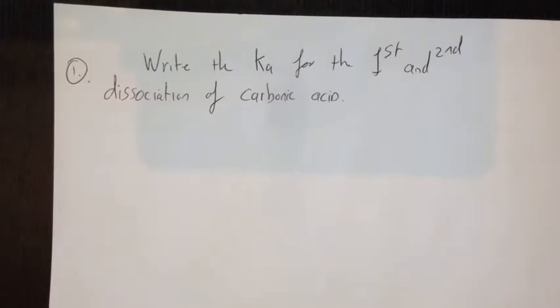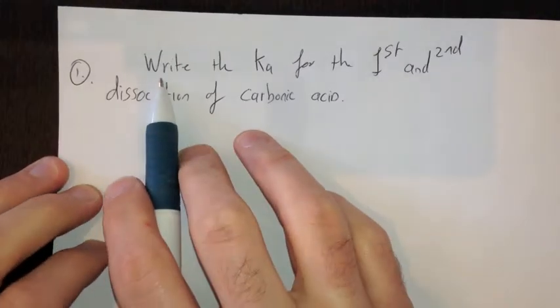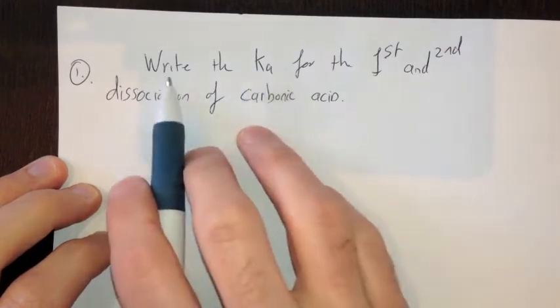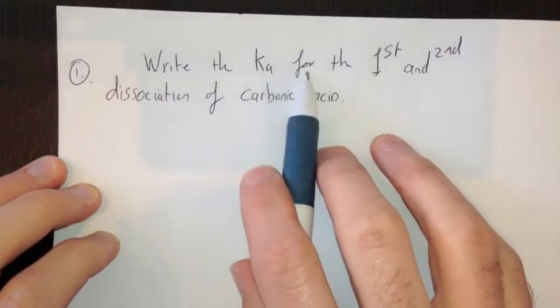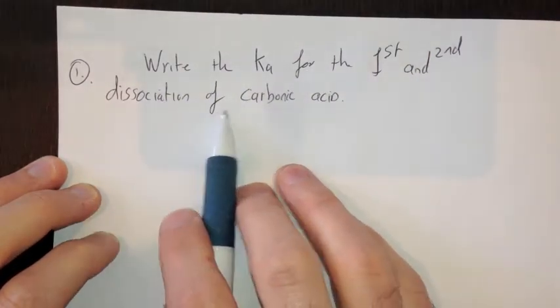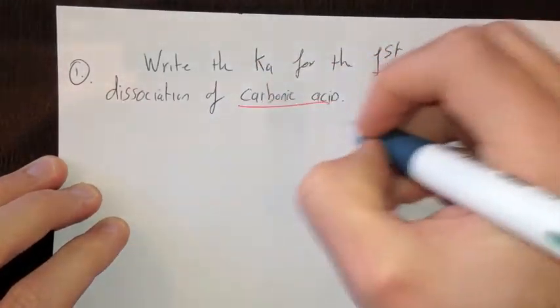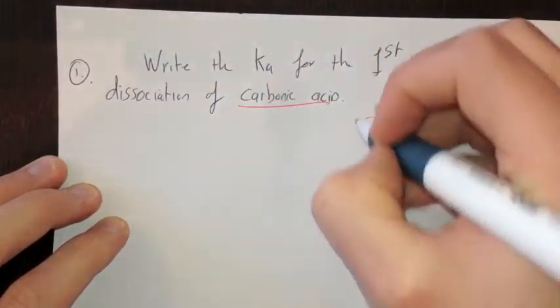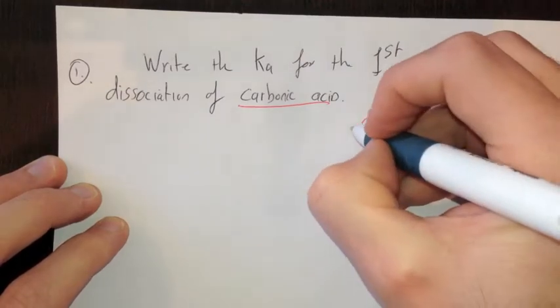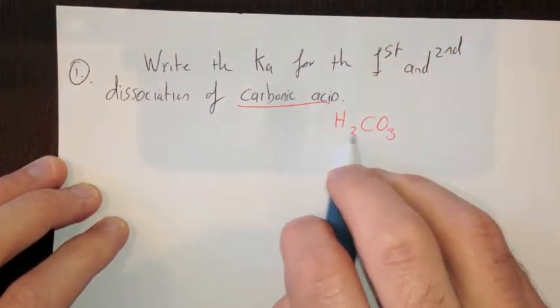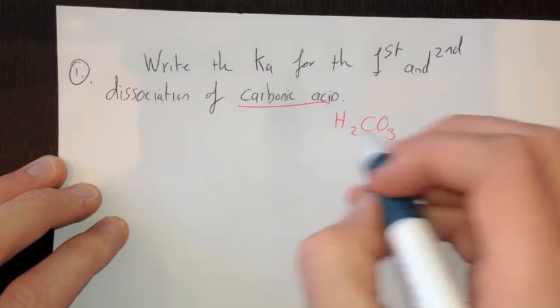Okay, welcome to the first question on acidity constants and acid-base equilibria. The first question is a pretty simple one, just writing the Ka. Write the expression for the Ka for the first and second dissociation of carbonic acid. Now first of all, you need to know what carbonic acid is. Obviously it's the carbonate ion, and this is a two negative ion, so you need two hydrogens to balance that out. So this is carbonic acid, H2CO3.